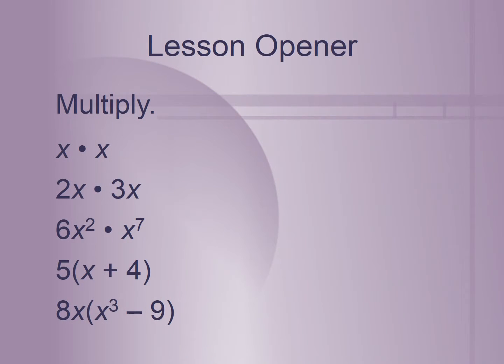Let's begin by looking at some exponent rules. x times x would be x squared, because when the bases are the same, you add the exponents. And then 2x times 3x — you multiply 2 and 3 to get 6, and x times x is x squared, so you get 6x squared.